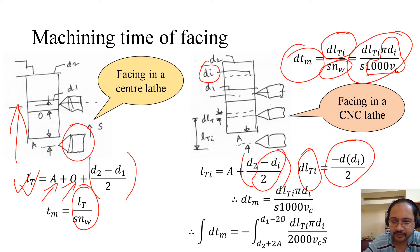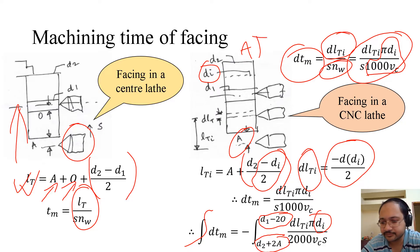Since it is a differential machining time, we have to integrate. How do we integrate? We integrate from the lower value of Di to the highest value of Di. What is the lower value of Di? It is D1 minus twice the over travel. What is the higher value of Di? It is D2 plus twice the approach distance. The approach distance is here and also here.